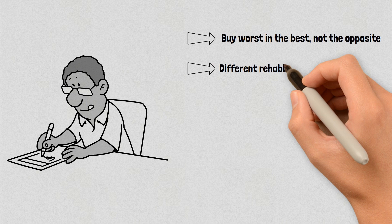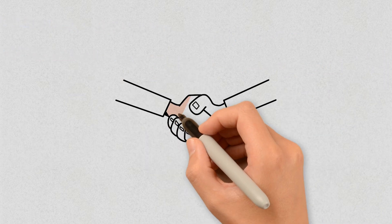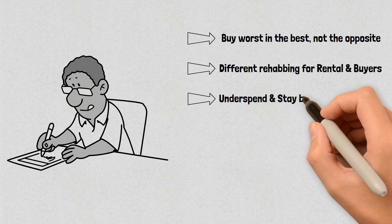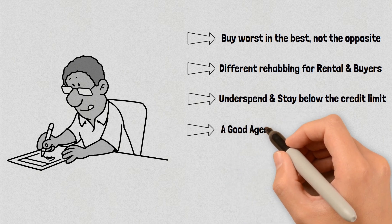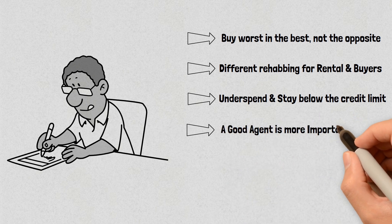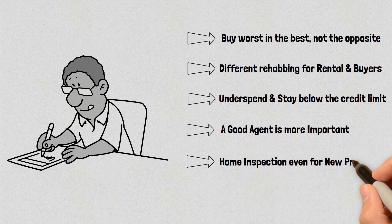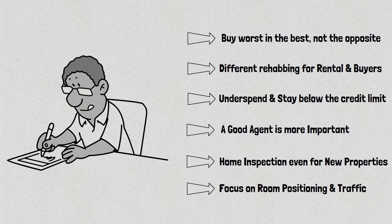If you're rehabbing a house, always know there's a lot of difference between rehabbing for a rental property and rehabbing for a buyer. Spend more money if you're looking for a buyer. Try to underspend and wait for a property you can reasonably afford to spend money on. Choosing a good real estate agent is more important than the brokerage they work for. Always get a home inspection, even if it's a newly constructed property. Things like house paint and furniture are not as important as room positioning and traffic, because they can be quite expensive to change.